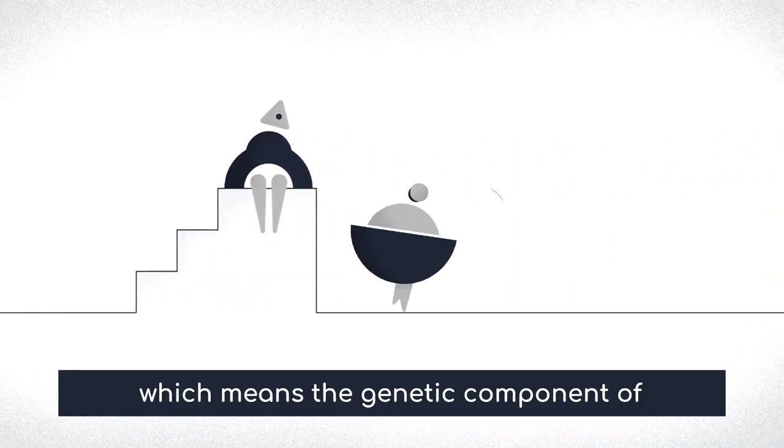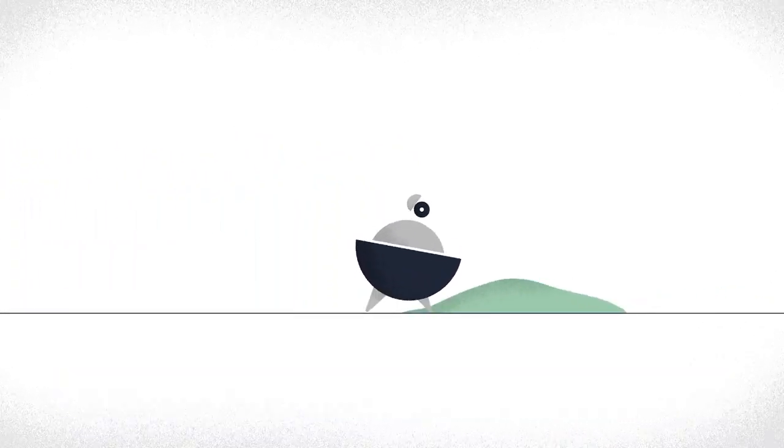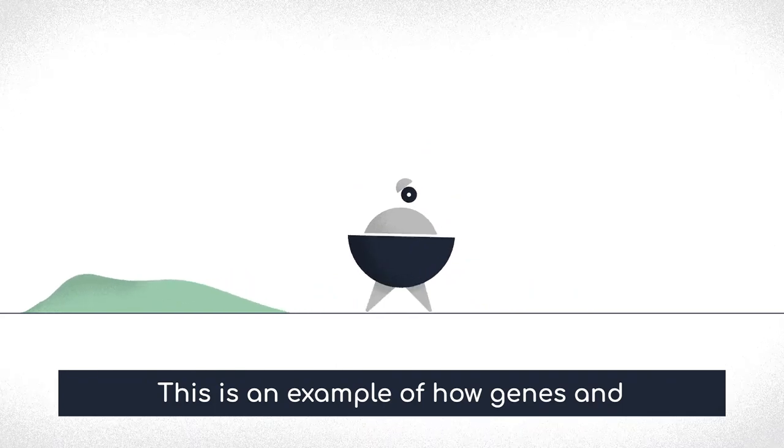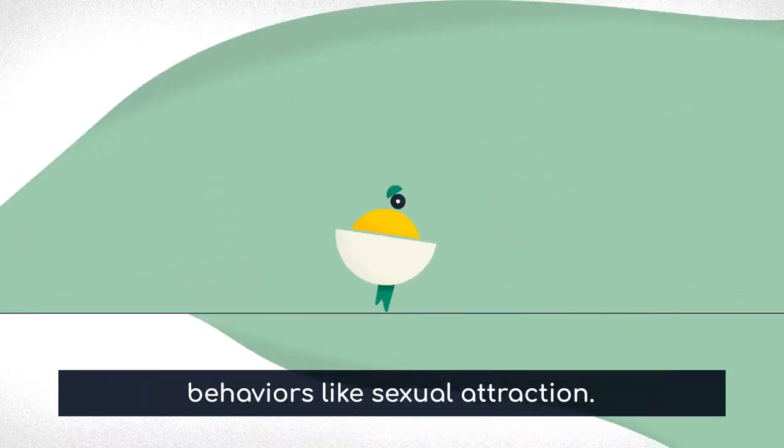This means the genetic component of same-sex behavior may have also changed. This is an example of how genes and the environment can interact to influence behaviors like sexual attraction.